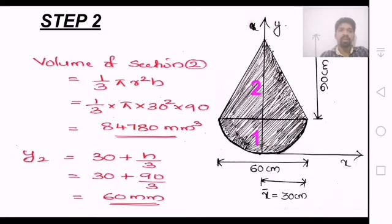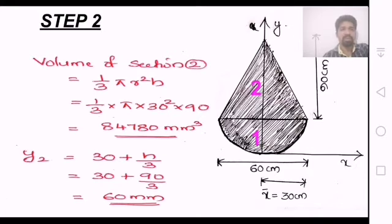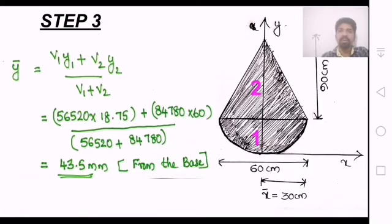For the cone section, the volume is 1 by 3 pi r square h, which gives 85,780 mm³. The corresponding y-distance for the cone is the hemisphere radius 30 plus h by 3, which equals 60 mm. Substituting into the center of gravity equation: y-bar equals v1 y1 plus v2 y2 divided by v1 plus v2, giving y-bar equal to 43.5 mm from the base.